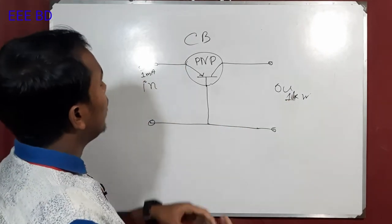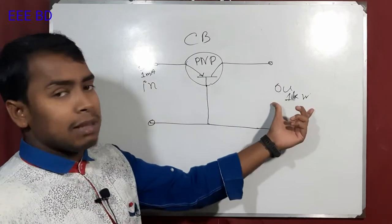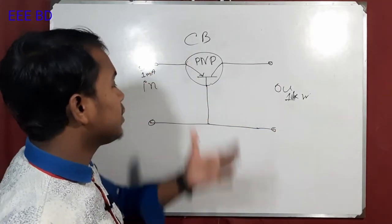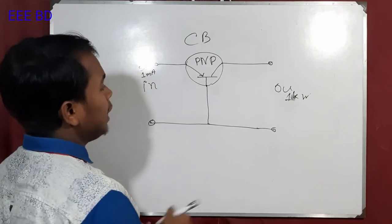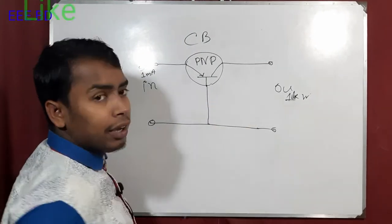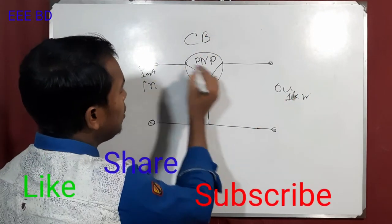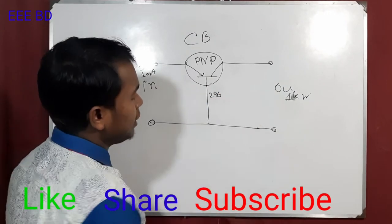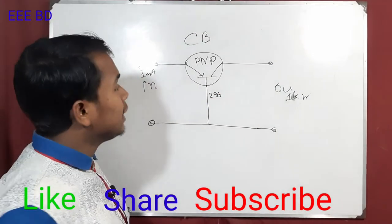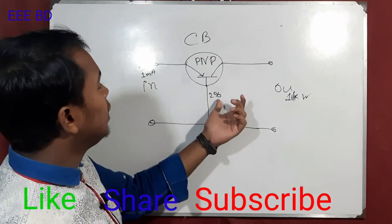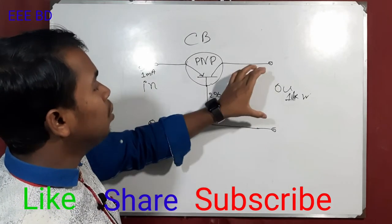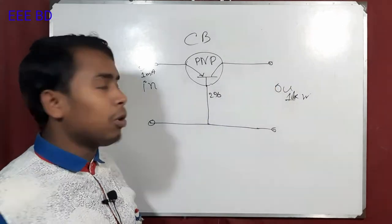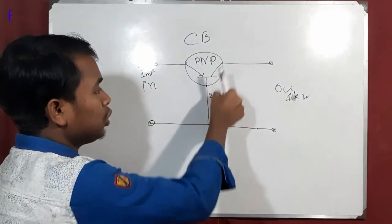This is the Common Base Configuration. The data is the base current. This is the base current. This is the output current. The current is provided.